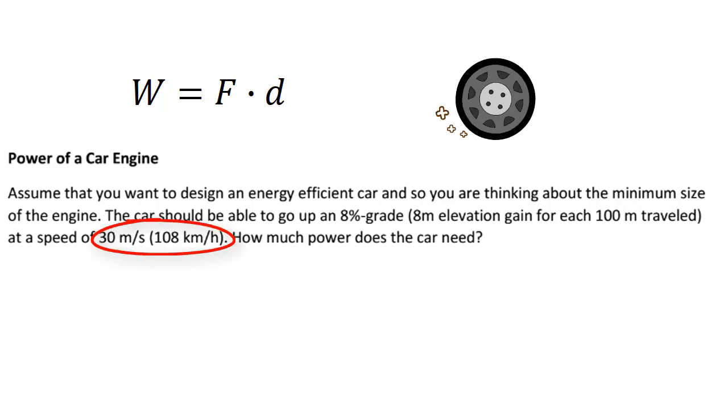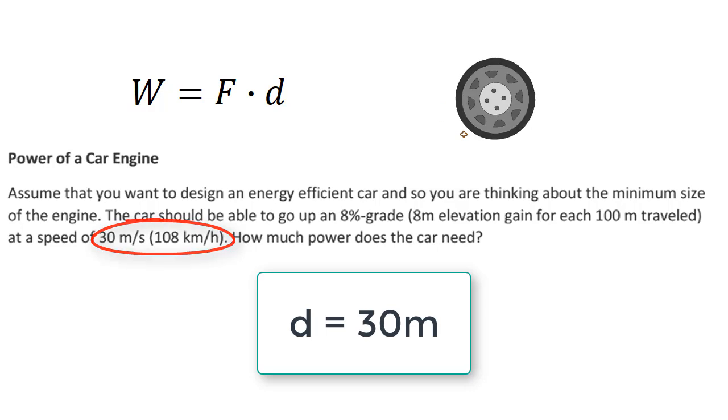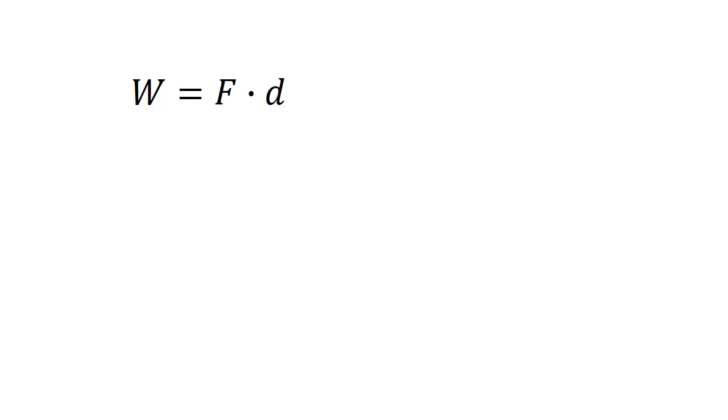The answer to this question is hidden in the question itself, which is 30 meters per second. W is equal to F times D, where F is force in newtons and D is distance in meters. In this case, we want our force to be the frictional force.